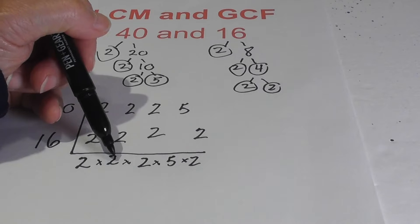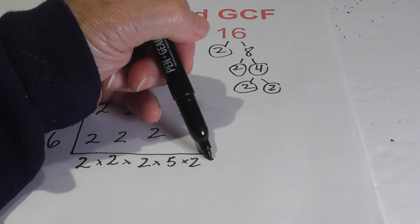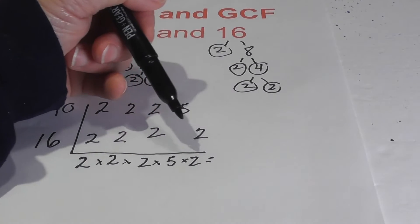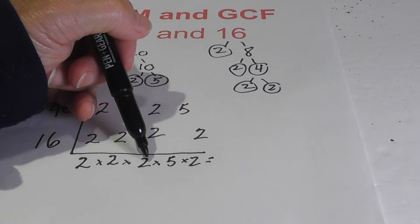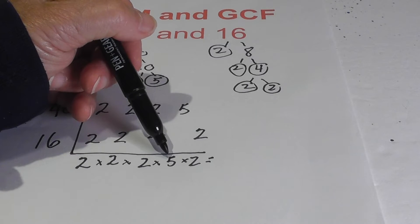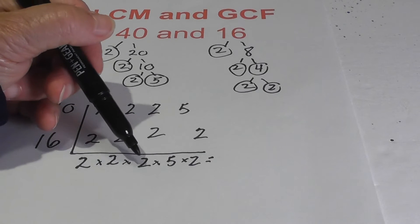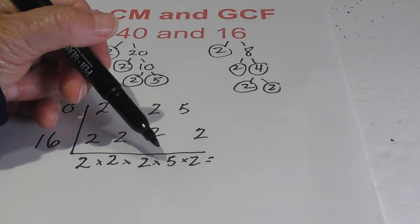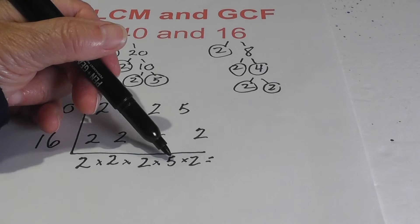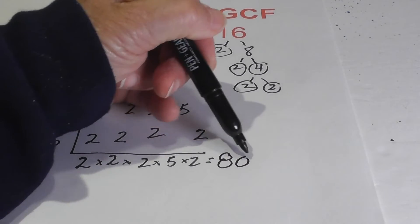2 times 2 is 4, times 2 is 8 — excuse me, that's not right. 2 times 5 is 10. Let me redo: 2 times 2 is 4, 4 times 2 is 8, 8 times 5 is 40, 40 times 2 is 80. So the LCM is 80.